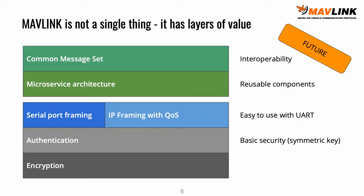What we can keep is the common message set and the microservice architecture. There's nothing wrong with having a way to transmit parameters or commands. But on the framing side, we still need serial port support — that's a core value of MAVLink over everything else. But we can also easily use an IP framing with quality of service. Nobody says we can't run straight on ROS 2. Framing is there, we have a semantic definition.